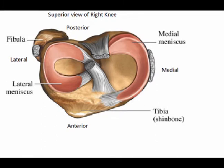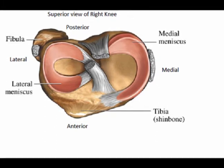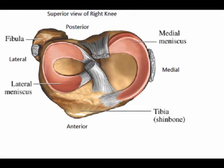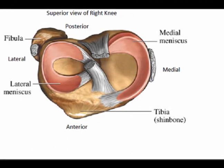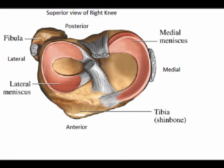The meniscus are attached to the tibial plateau along the periphery. They are also attached to the patella via the patella meniscal ligaments, which are a thickening of the anterior knee joint capsule.